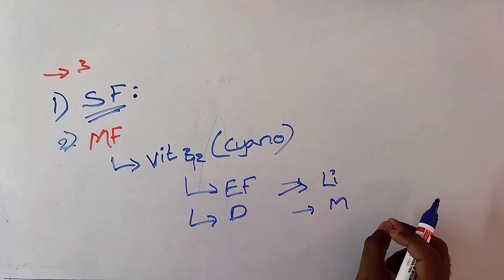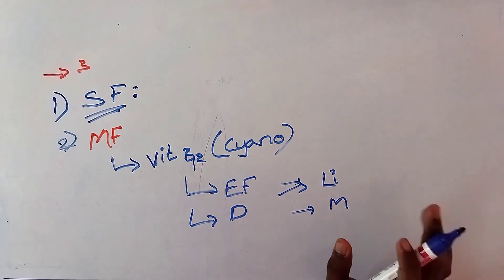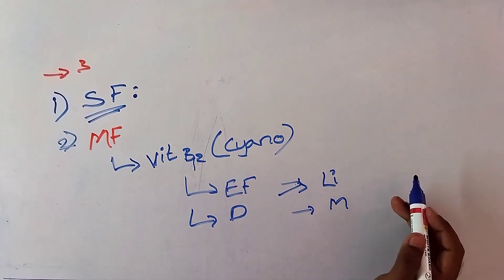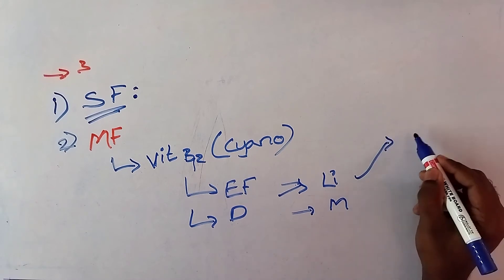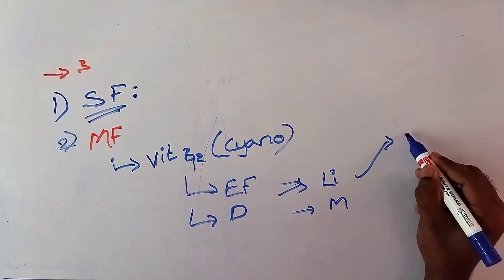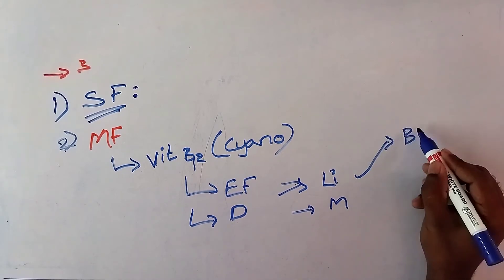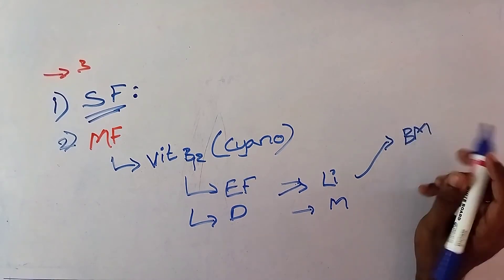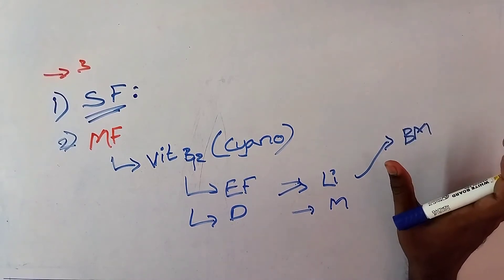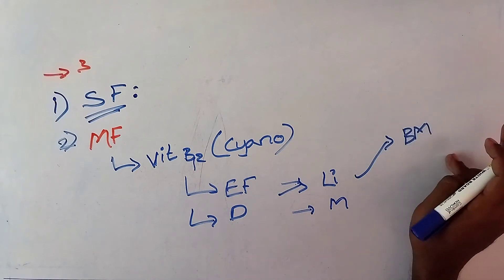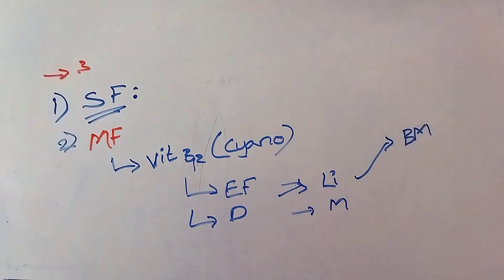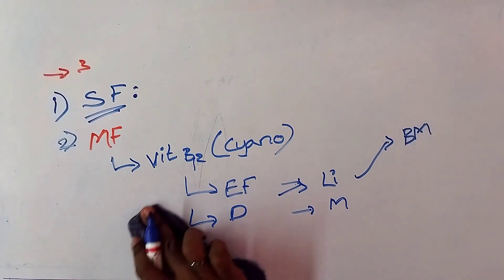When necessary, Vitamin B12 is transported from the liver to the bone marrow, and it promotes maturation of RBC.